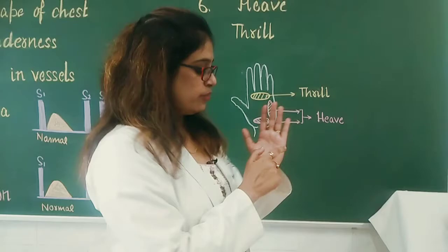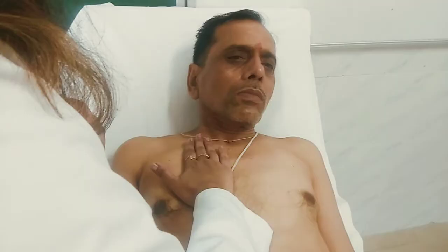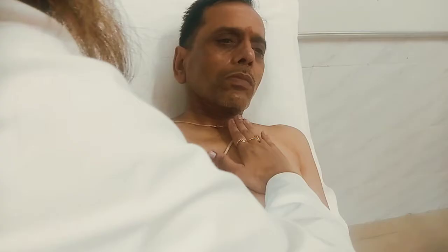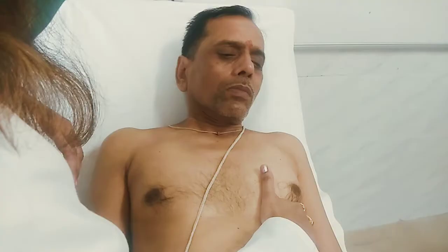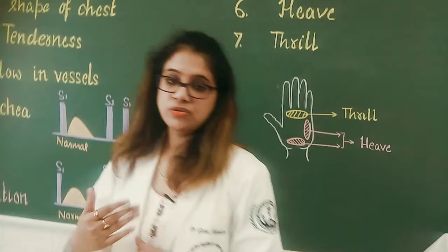Let us see on our subject. This is the aortic area, this is the pulmonary area, this is the tricuspid area, and this is the mitral area. You have to put the flat of your hand on each area. This is how you palpate for the thrill.